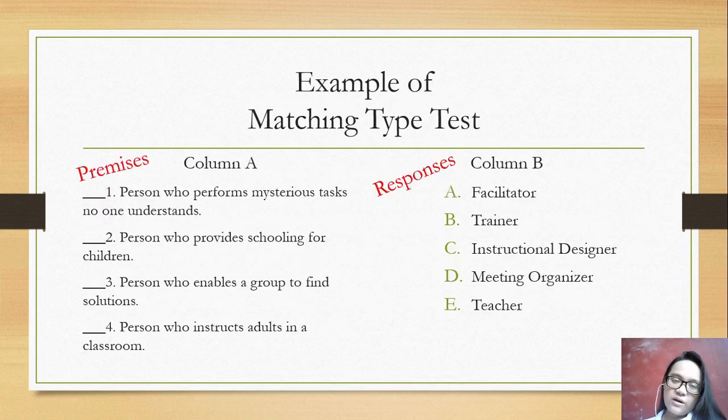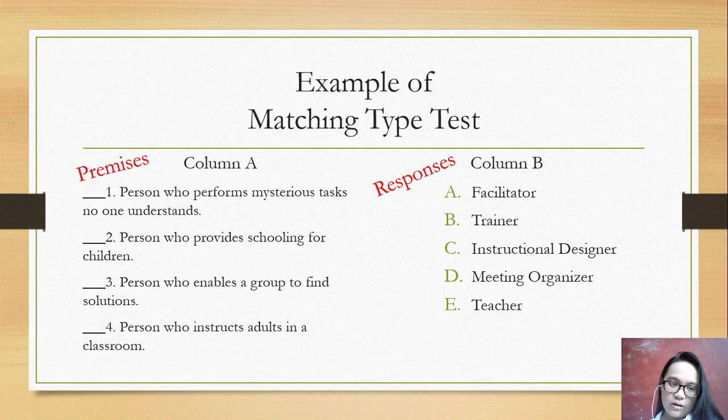So we have here an example of matching type test. For column A, these are the definitions or what you call premises. And then column B contains the answers or responses to the meanings or definitions from column A.